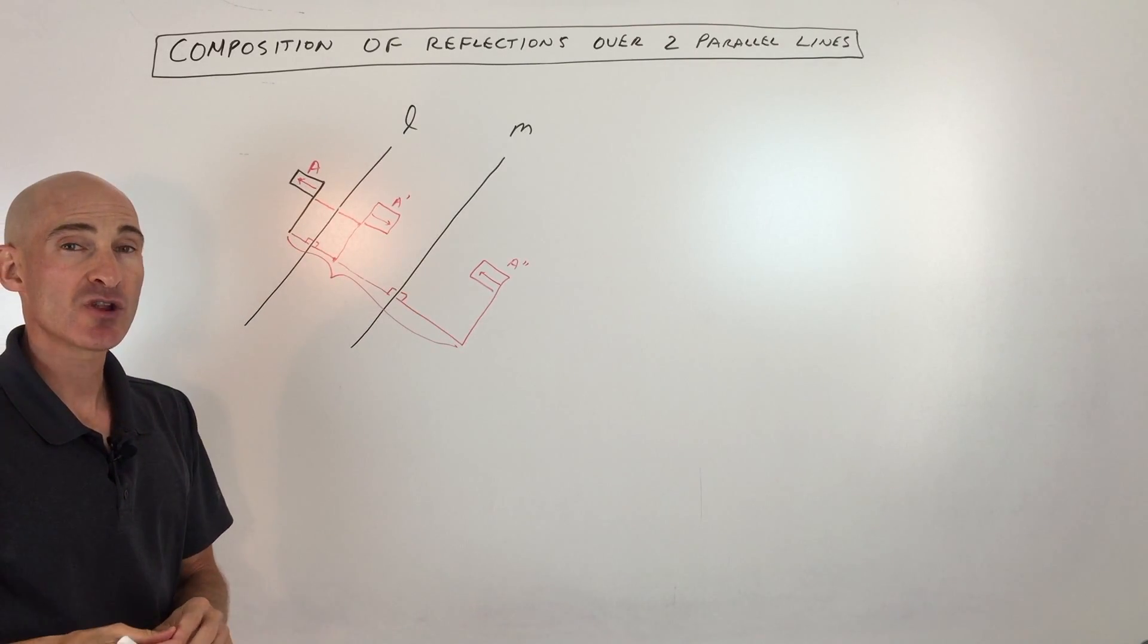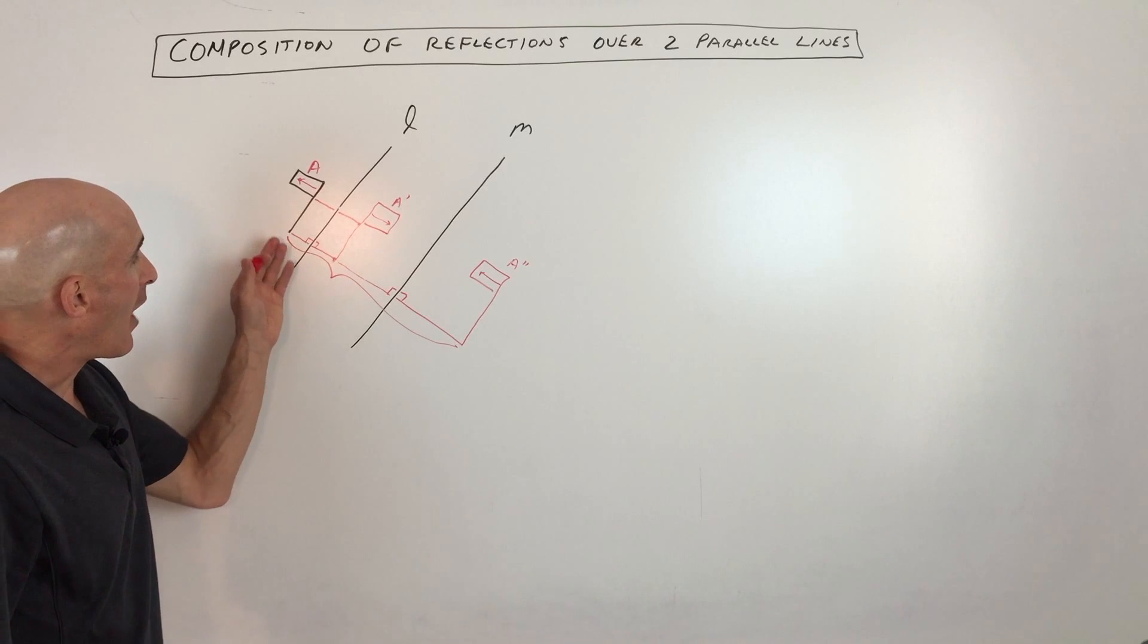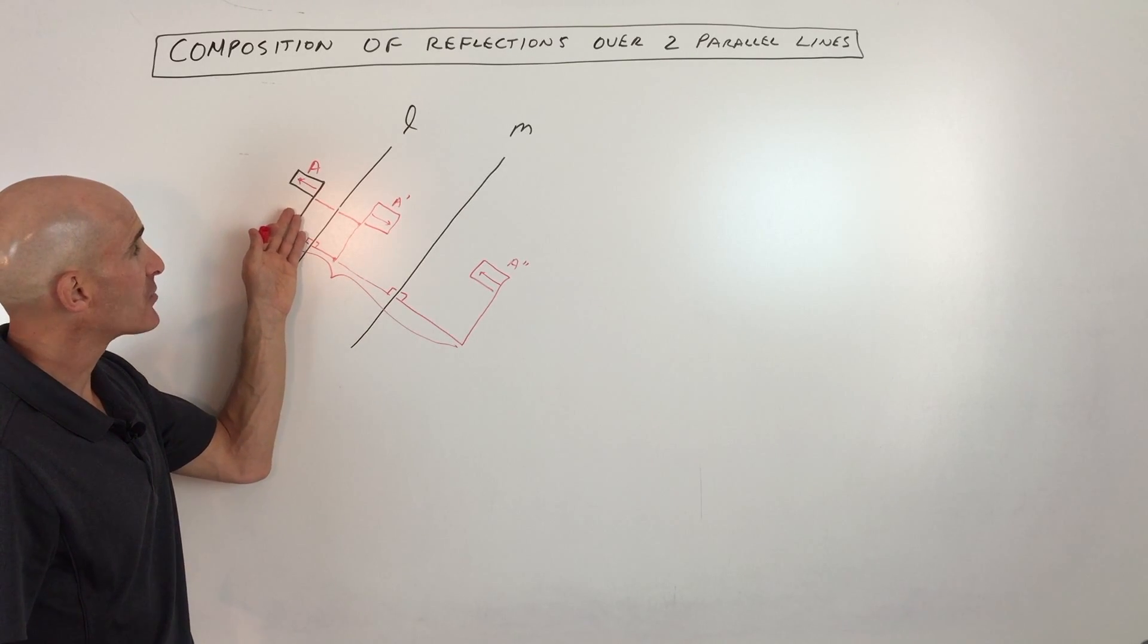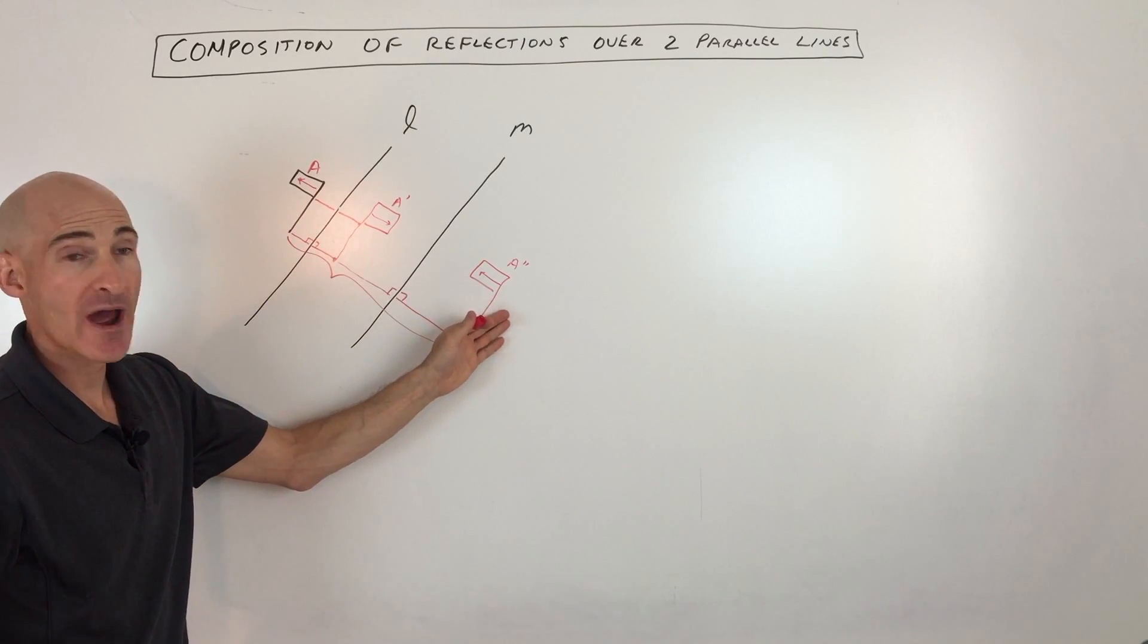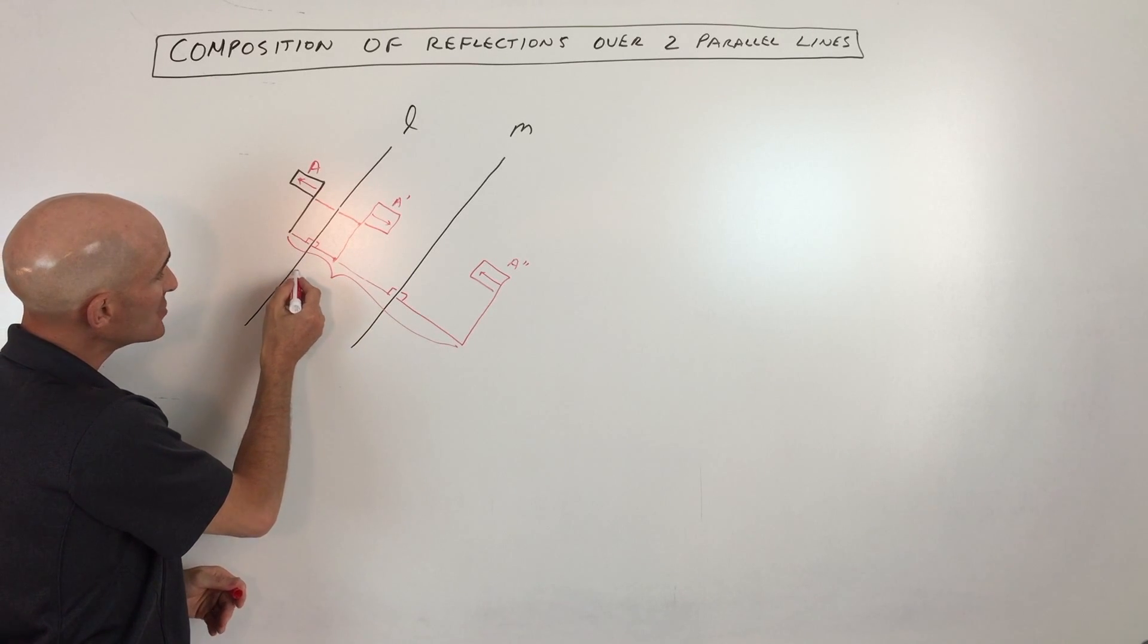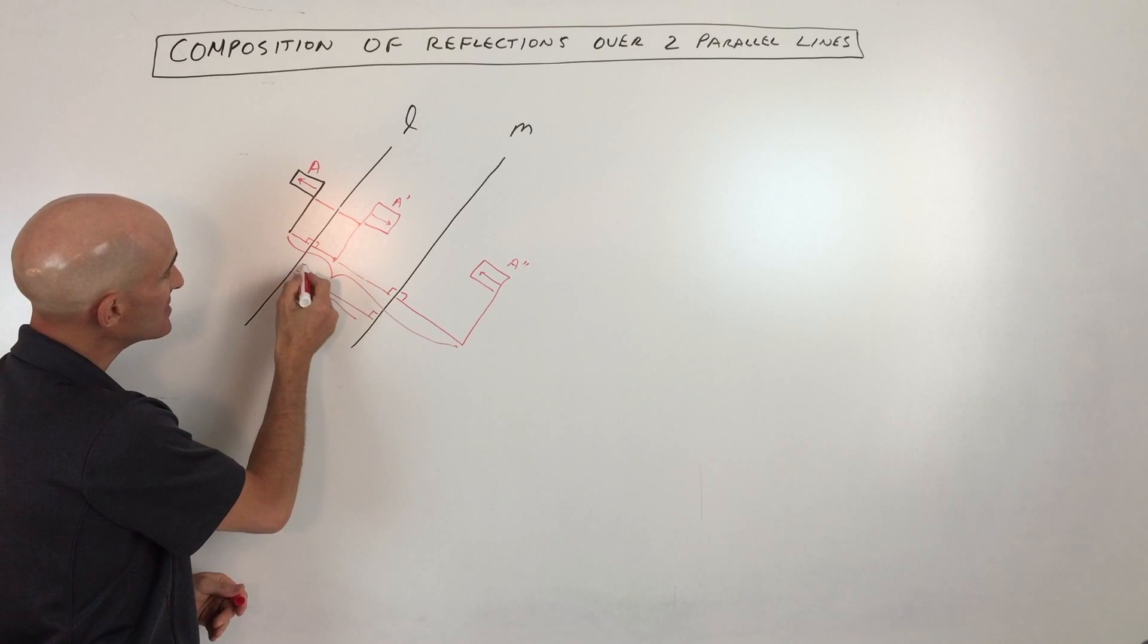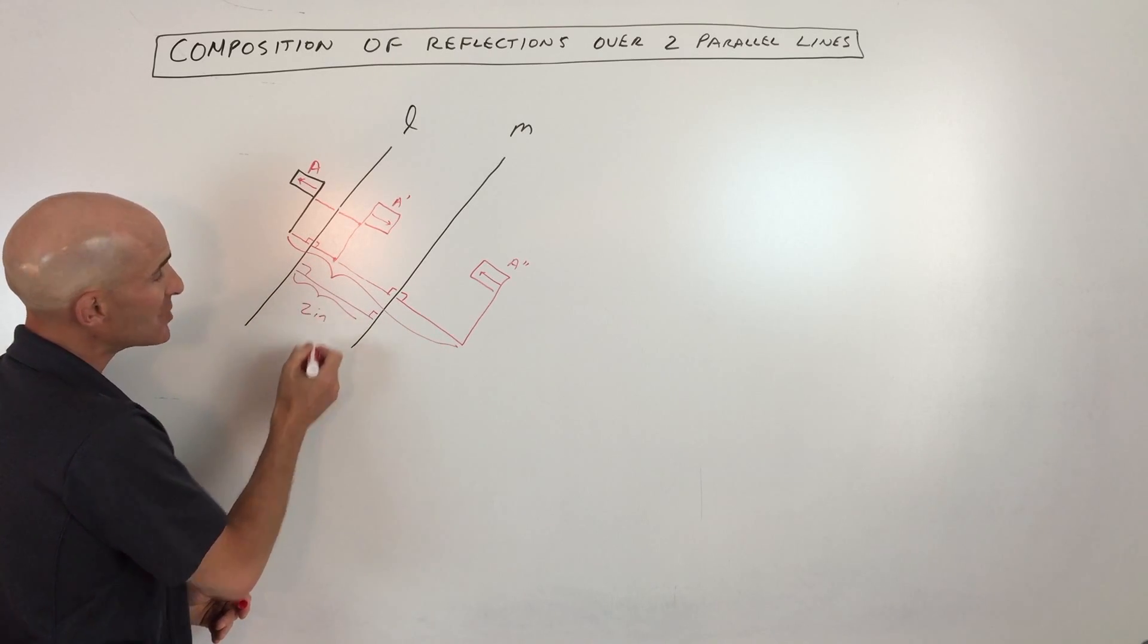Now the question that sometimes they'll ask you in your class, in your geometry class, is how far does it slide or translate from a to a double prime? And what you're interested in is the distance between the two parallel lines, of course the perpendicular distance. Let's just say that this is two inches.